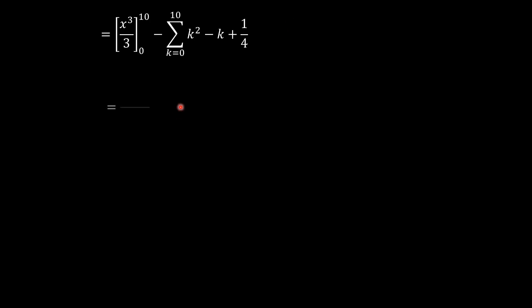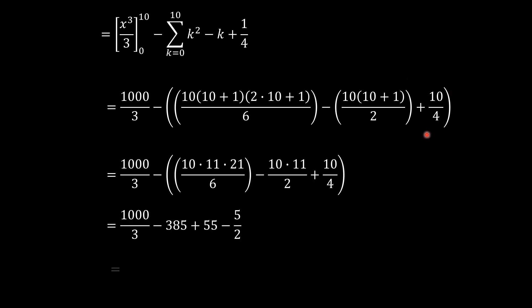For k squared, we said it's n times n plus 1 times 2n plus 1 over 6, minus n times n plus 1 over 2, that is 10 times 11 over 2, plus one-quarter times 10, so 10 times one-quarter.